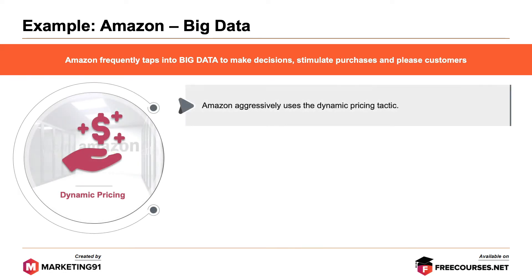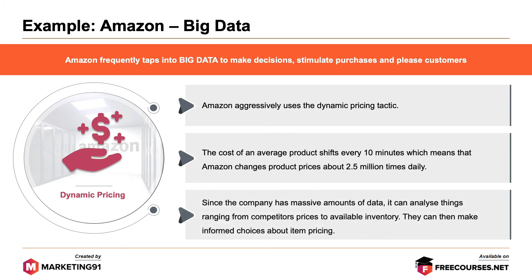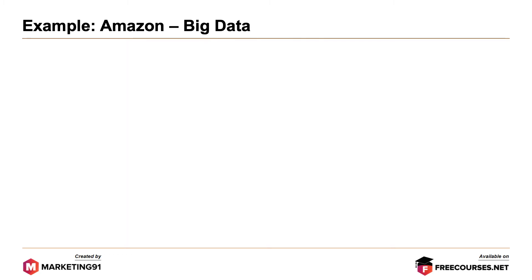Starting with dynamic pricing — Amazon aggressively uses the dynamic pricing tactic. The cost of an average product shifts every 10 minutes, which means that Amazon changes product prices about 2.5 million times daily. Since the company has massive amounts of data, it can analyze things ranging from competitor prices to available inventory, and then make informed choices about item pricing.